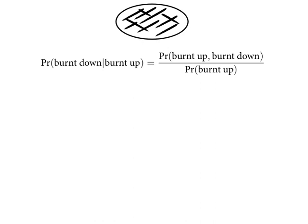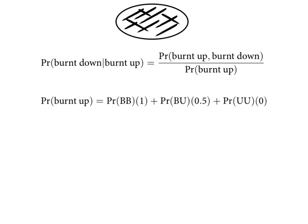We need the denominator: the probability the upside is burnt equals the probability we've got the BB pancake — burnt on both sides. When we have the burnt-burnt pancake, the probability the upside is burnt is one. There are three states the world can be in. If it's the first pancake — burnt, burnt — then the probability the upside is burnt is one. If it's instead the burnt-unburnt pancake, then it's a half chance, because either side is equally likely to be up. And for the third pancake, the good one, unburnt on both sides, there's no chance we'd observe a burnt side up.